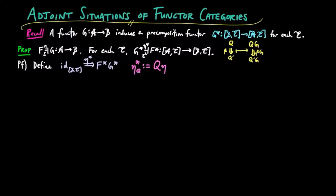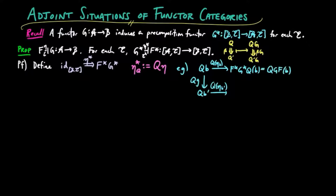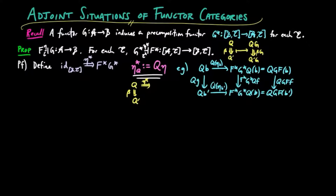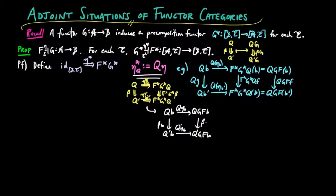So, for example, if g is a B-morphism, we see that the following diagram commutes by naturality of η. And if β is a natural transformation from Q to Q′, this yellow square commutes by the naturality of β. Therefore, η* is well defined.